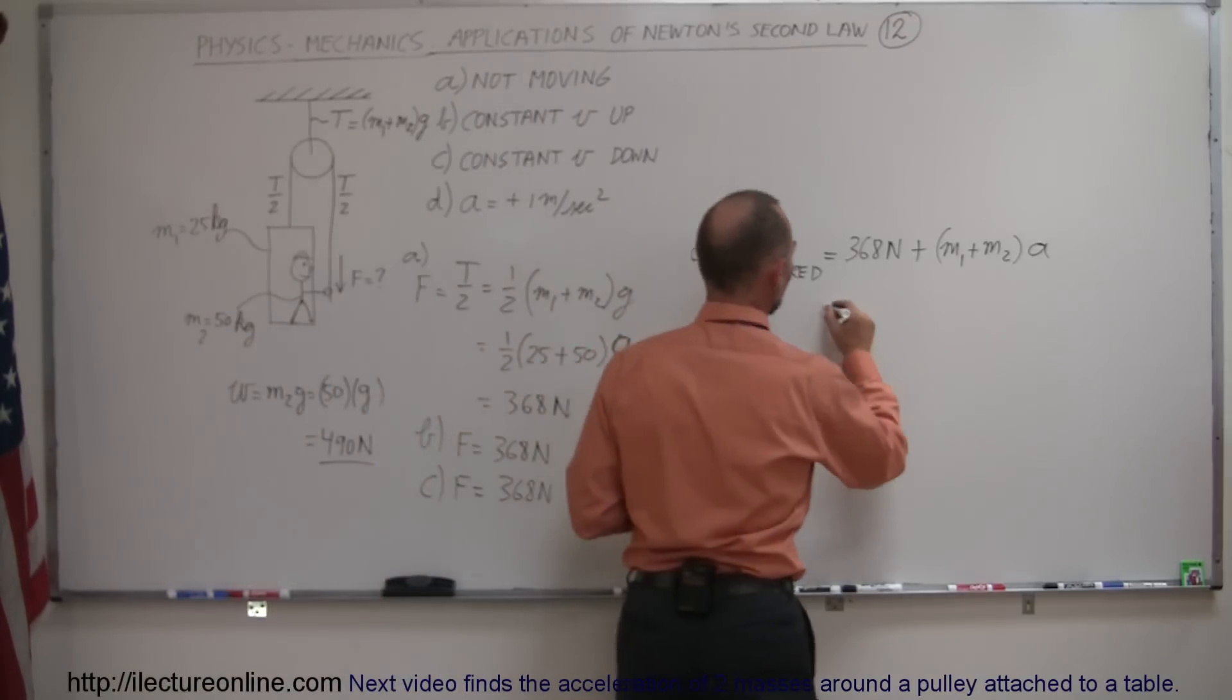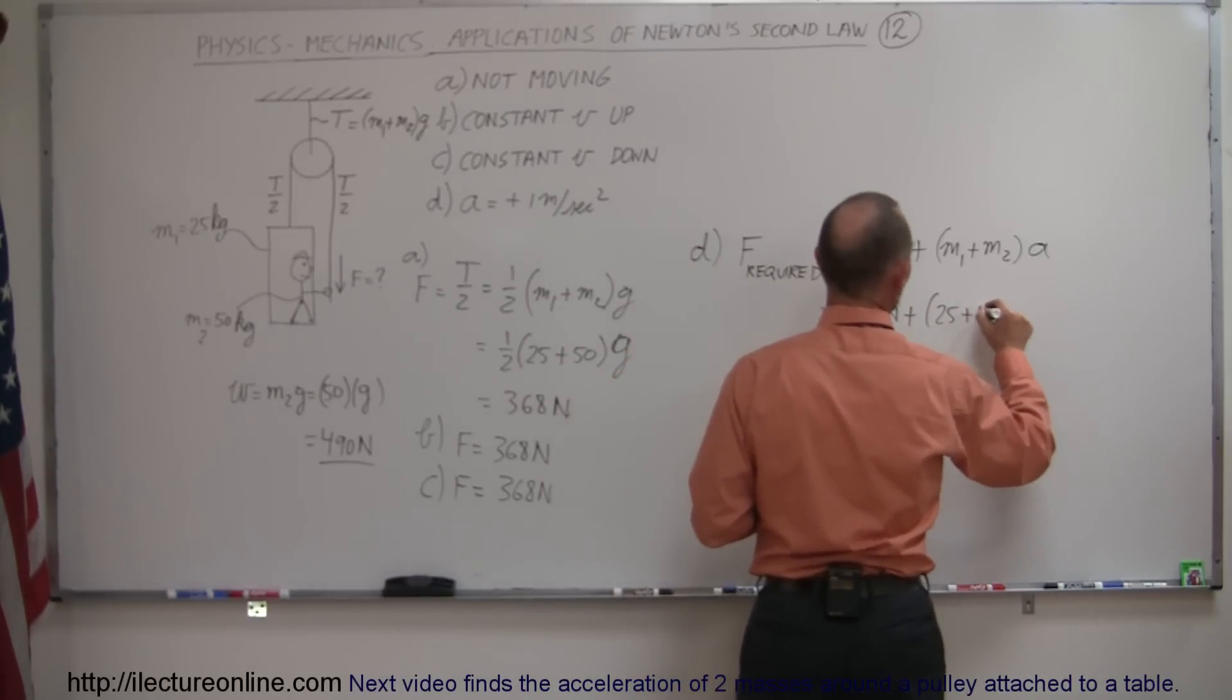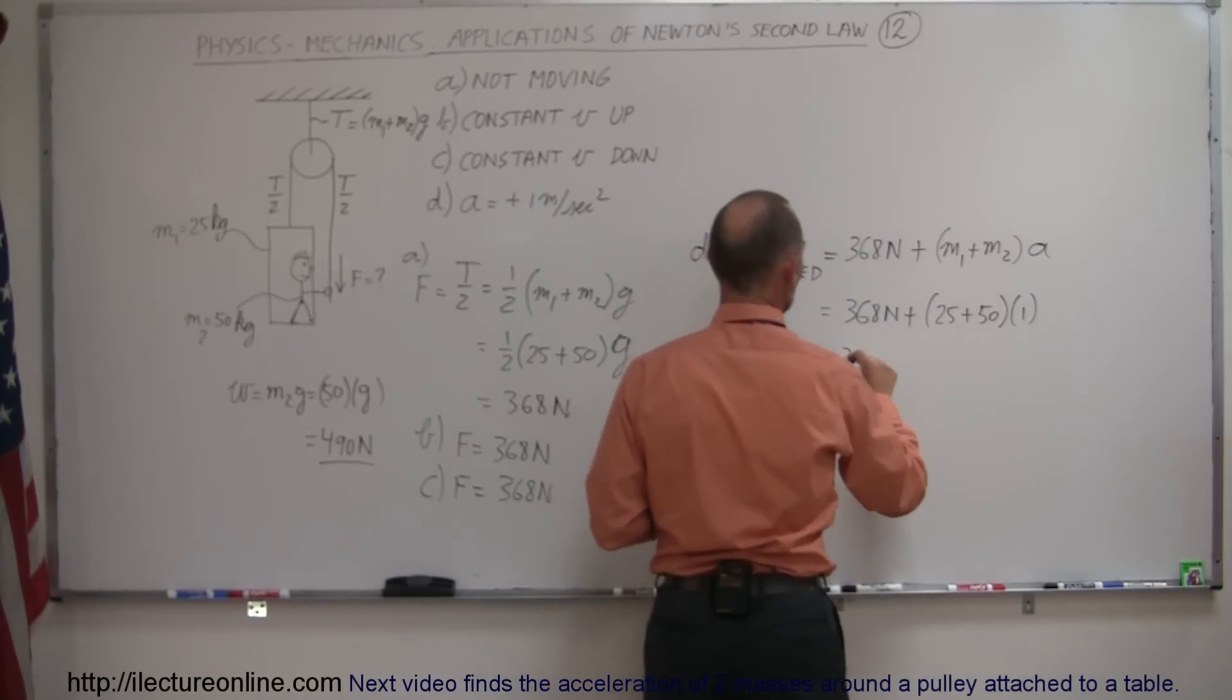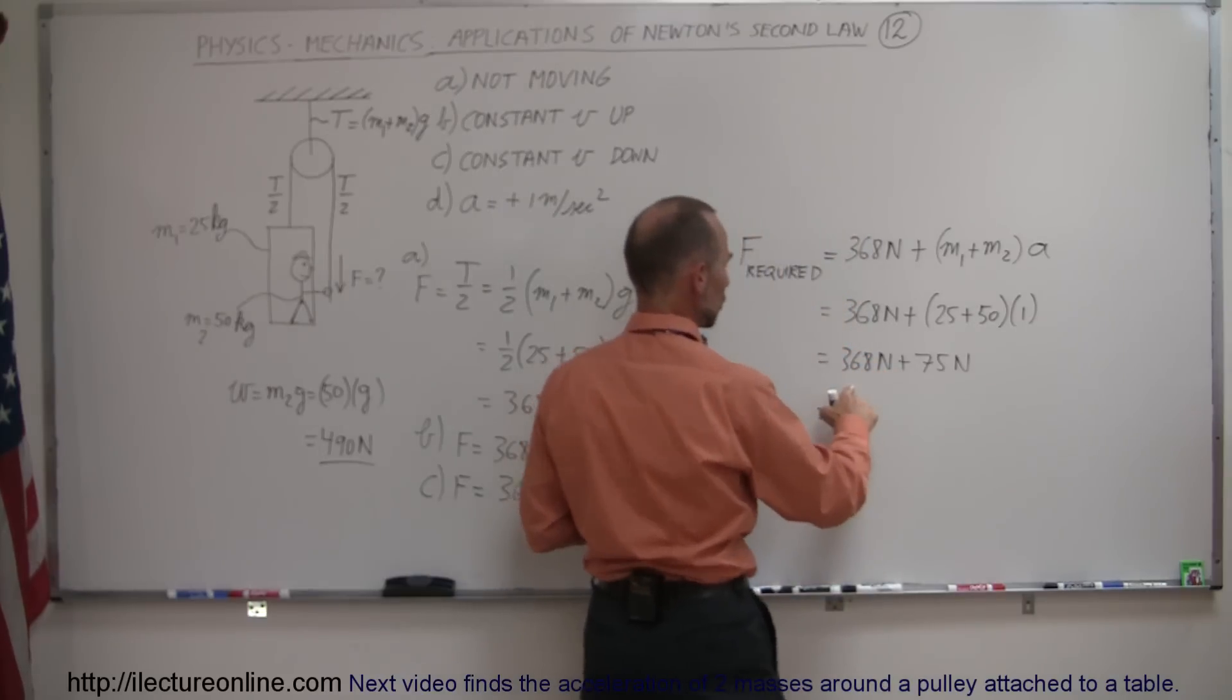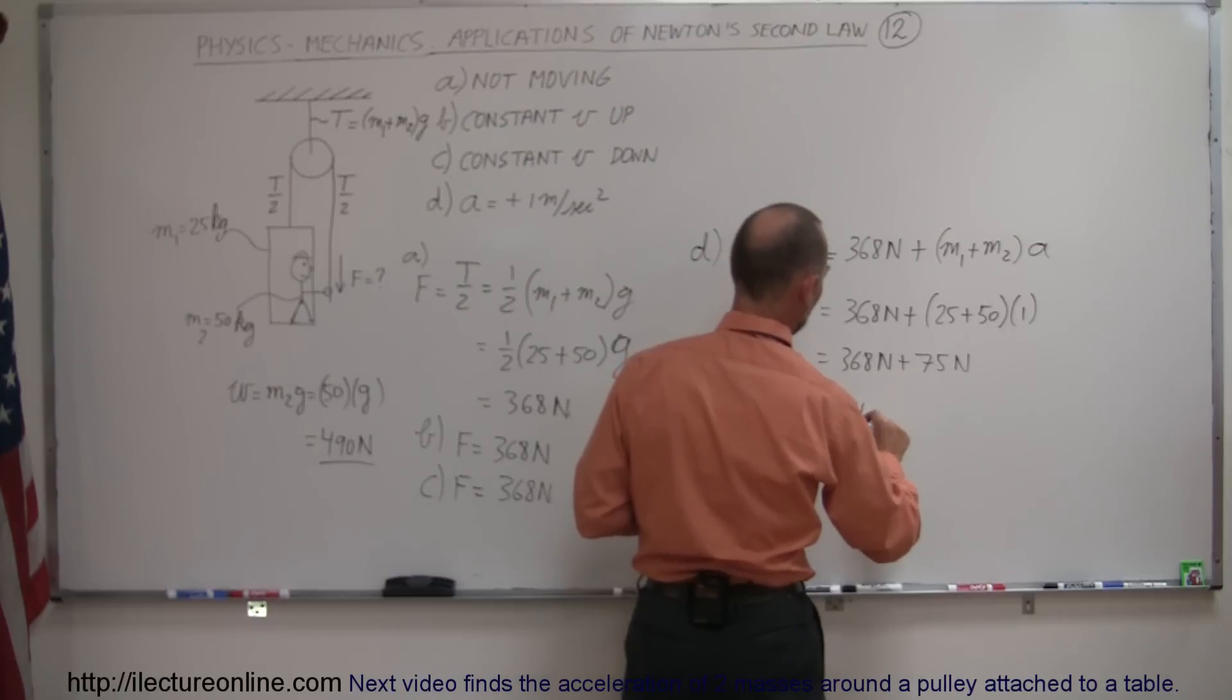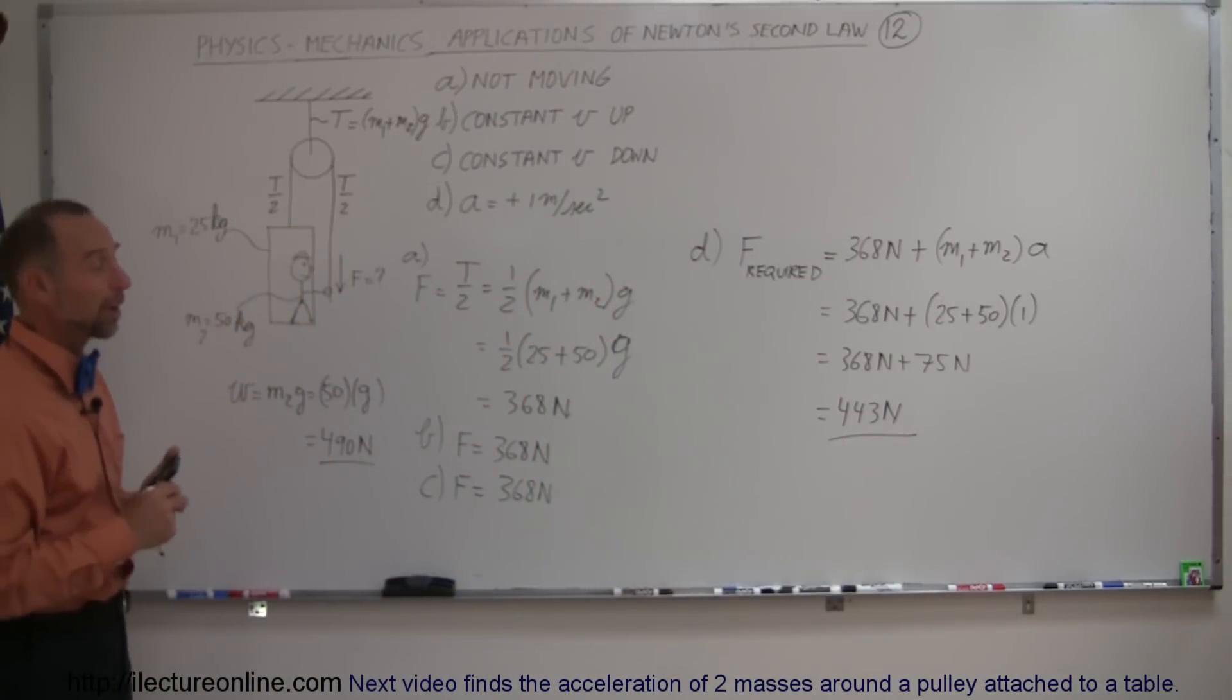So this is equal to 368 newtons plus, that's 25 kilograms plus 50 kilograms times one. And so that would be equal to 368 newtons plus an additional 75 newtons. And so that would be equal to 443 newtons, which is still less than the weight of the person. So that should theoretically be possible as well.